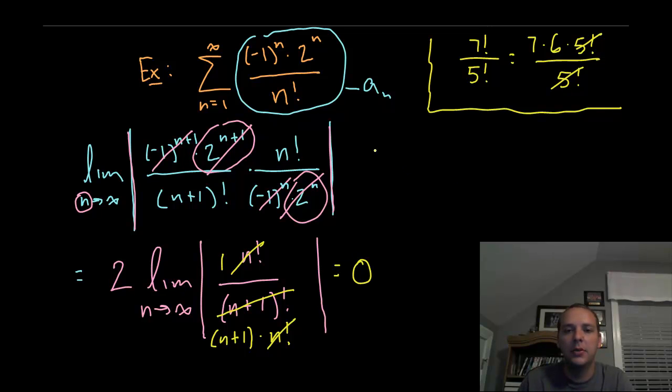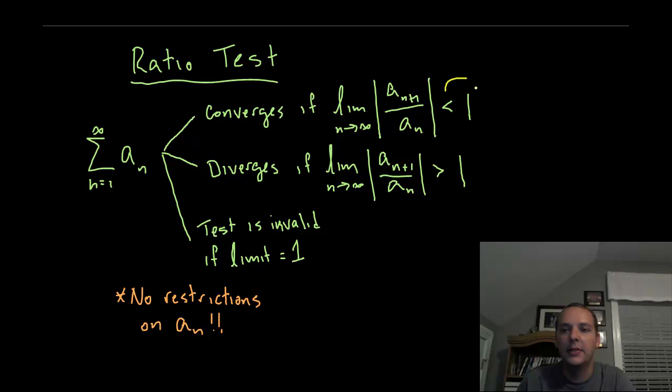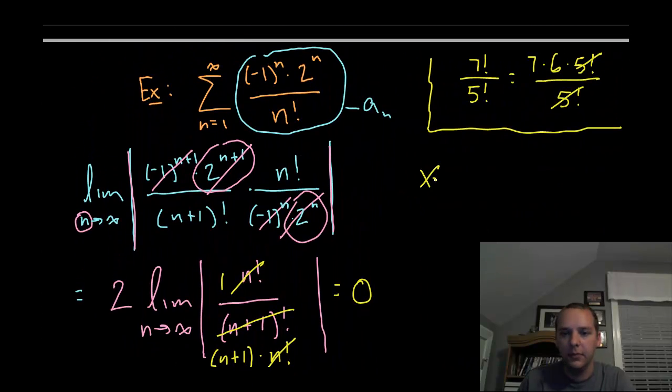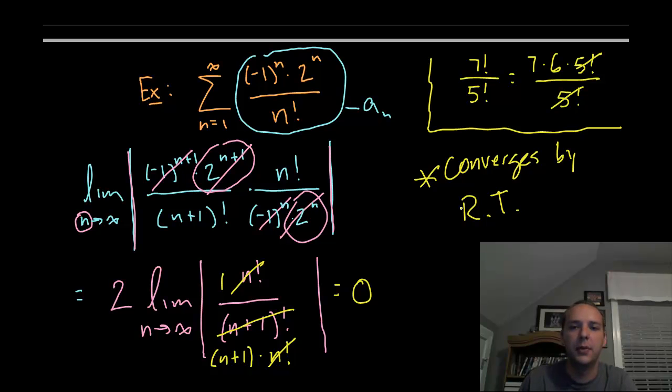So the limit as n goes to infinity of 1 over n plus 1 clearly goes to 0. Now, what I'm mostly interested in is not the fact that it's 0. I'm interested in the fact that it's less than 1. It could have been a half, 3 fourths, 0.9. I don't care. I'm interested in the fact that it's less than 1. So what that tells us is that this series converges by the ratio test.